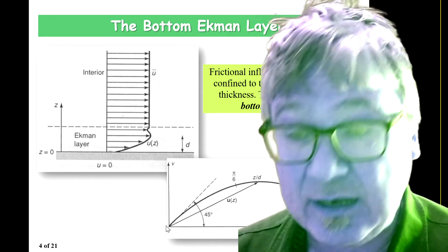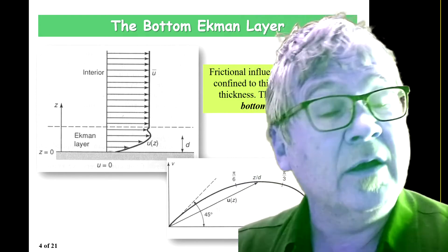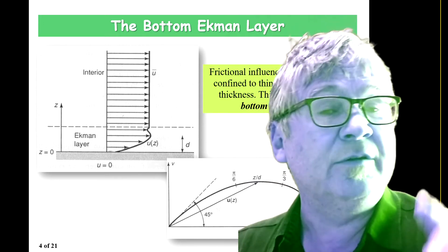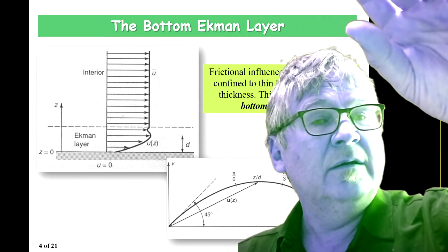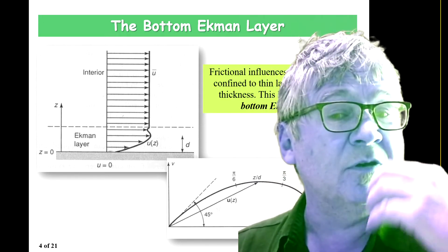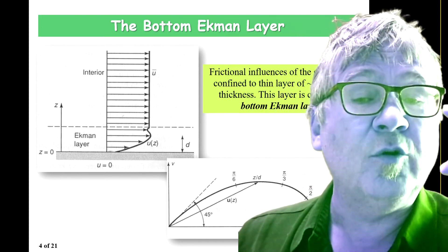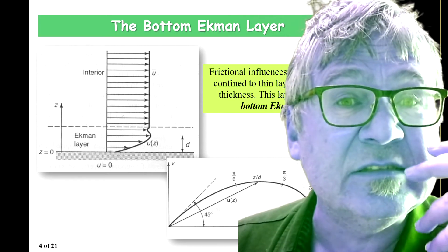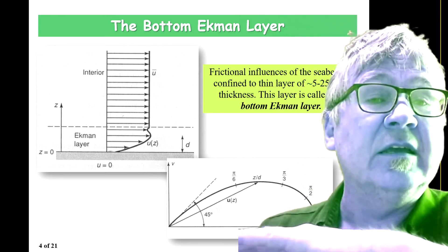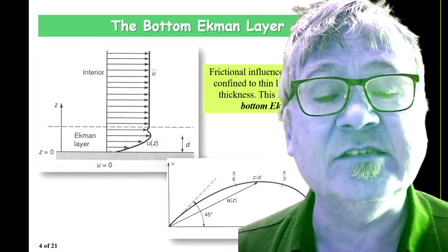This is the bottom Ekman layer. So now there is a coupling between the surface Ekman layer and the bottom Ekman layer because you need to create the flow that creates the bottom Ekman layer. And this is done through changing the slope of the sea surface.